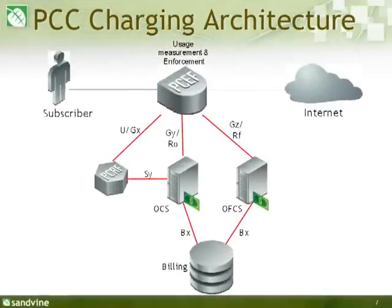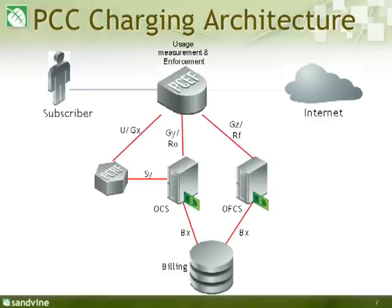Policy and charging control architecture: this is a very simplified diagram containing elements related to both prepaid and postpaid charging. Because of the real-time account updating required in a prepaid scenario, this is also called online charging, and postpaid is also called offline charging — I'll use those terms interchangeably. A number of interfaces are marked here: Ro and Rf are IETF standards; Gy is essentially Ro with 3GPP AVPs (attribute value pairs); Gz is Rf with 3GPP AVPs. There could be mediation between the policy charging enforcement point and the offline charging server, but that could also be built into the OFCS.